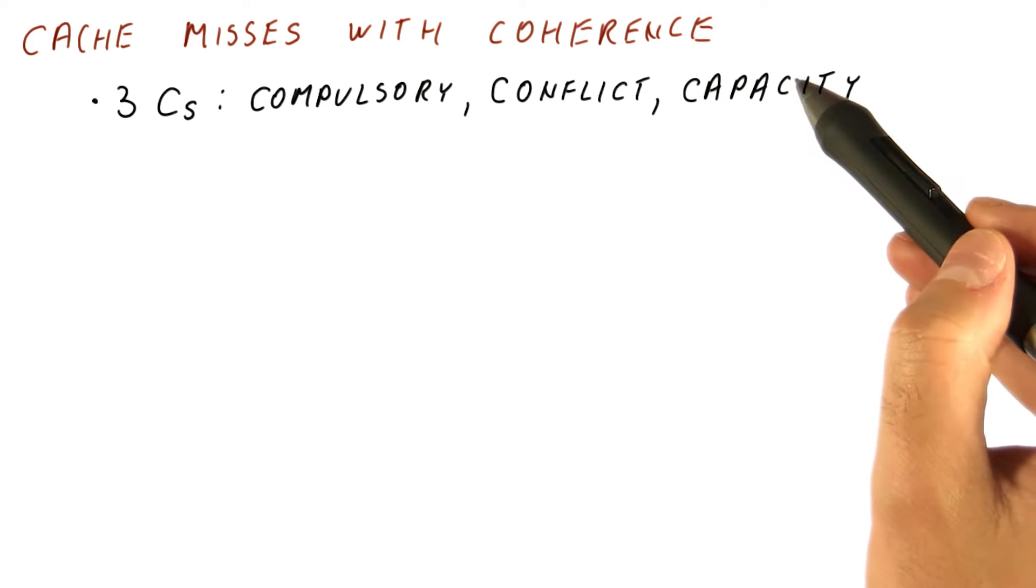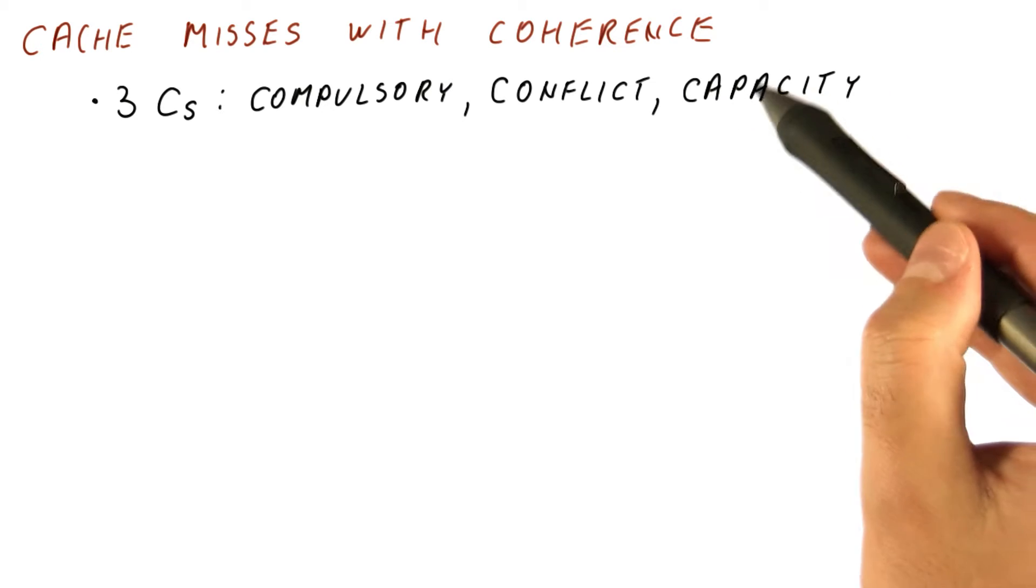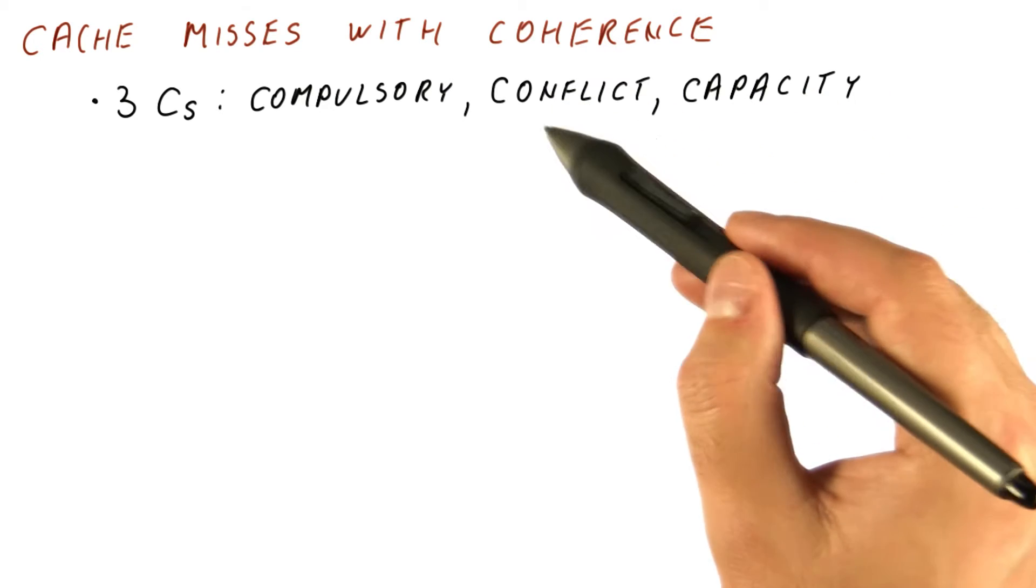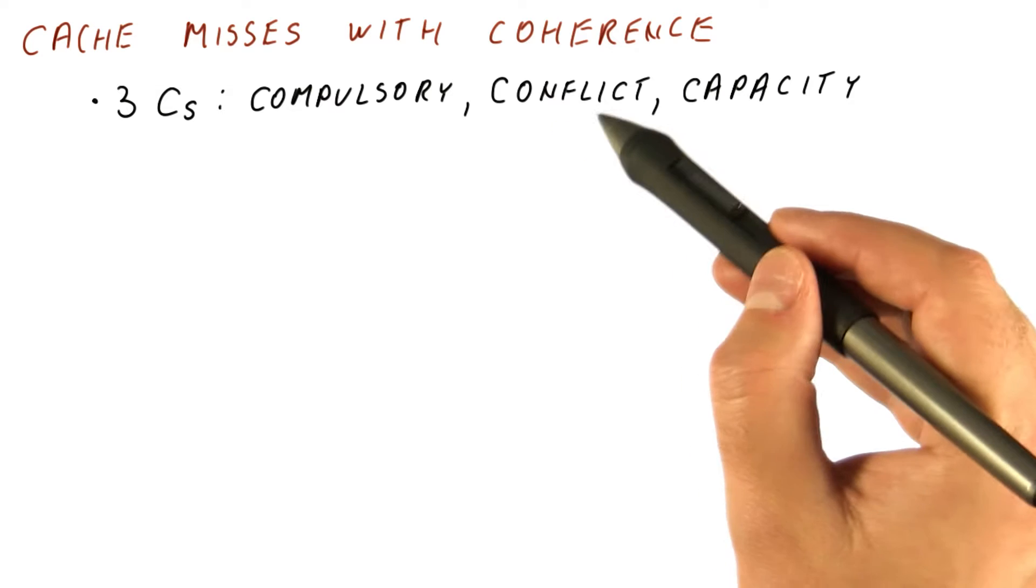Capacity misses occur because the block doesn't fit in a cache of this size. And conflict misses occur because the cache doesn't have enough associativity.